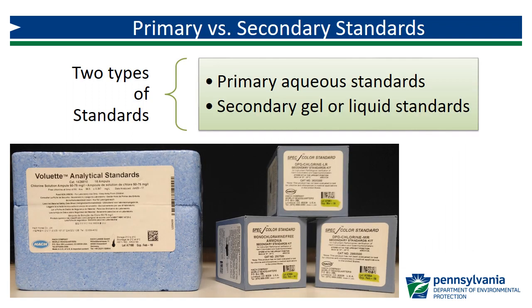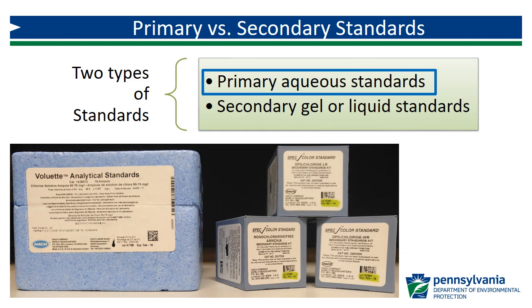There are actually two types of check standards discussed in Method 334.0: primary aqueous standards and secondary gel or liquid standards. Each standard has a defined role and specific requirements outlined in the method. In this video, we will focus on primary standards. Secondary standards will be covered in a later video.